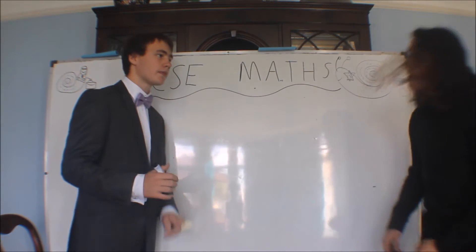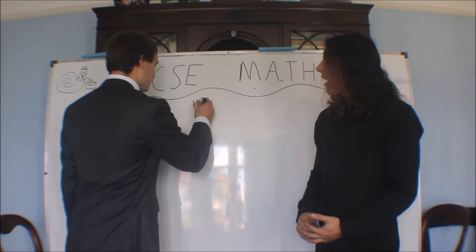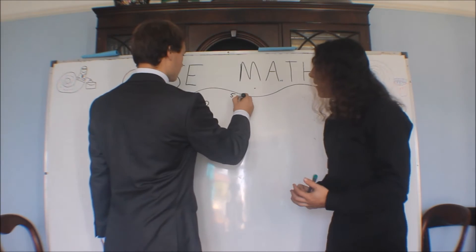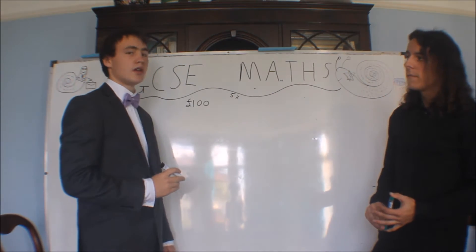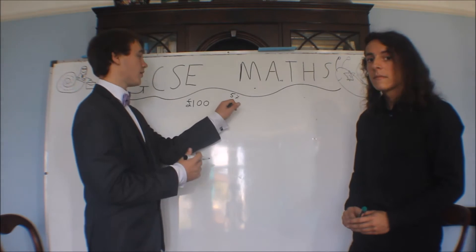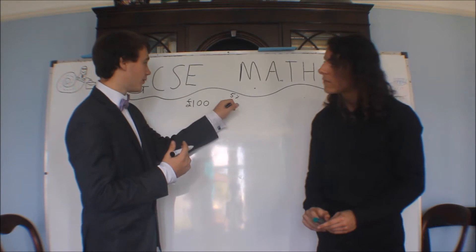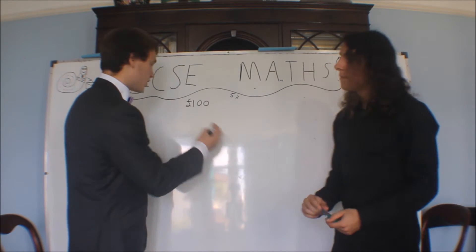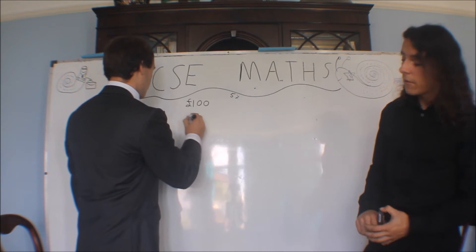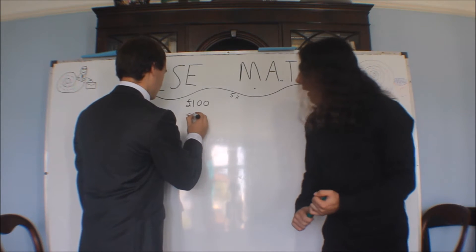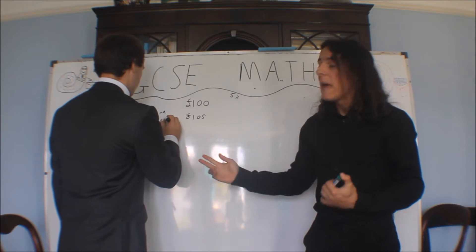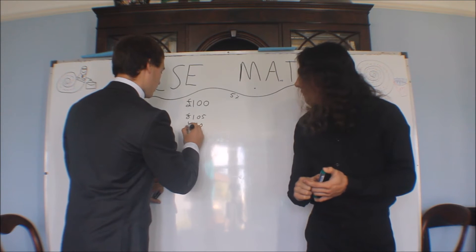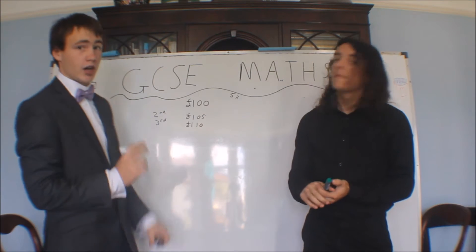So we have a number, say £100, and it increases by 5% every year. With simple interest, if you get 5% per year, every year you get 5% of 100. So you put in £100, the first time you're going to get 5% more of that, so in the second year you'll have £105 in total. And then the next year it'll be £110, because it keeps basing it off your first figure. You're just adding £5 on, because that's 5% of 100, every time.